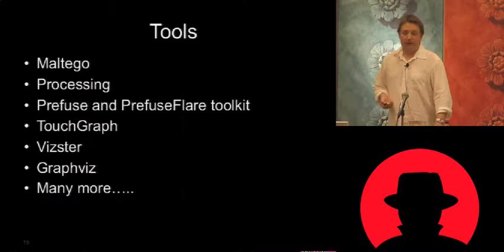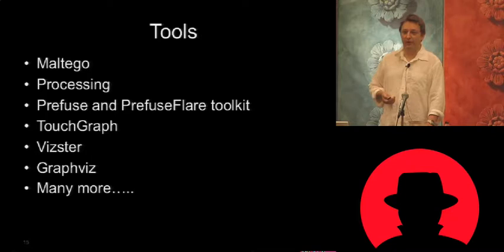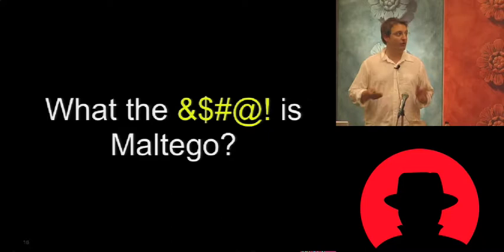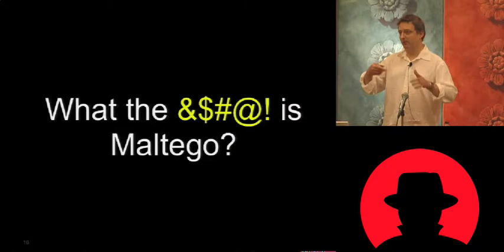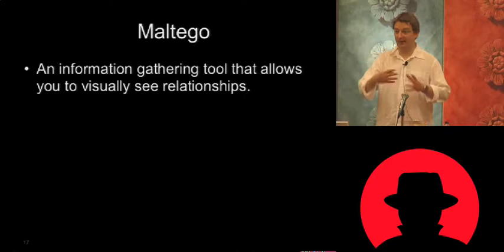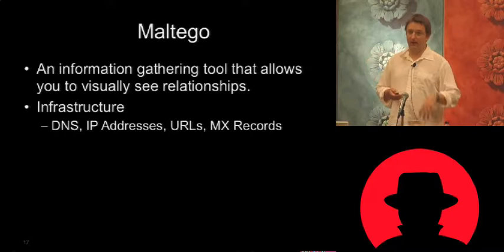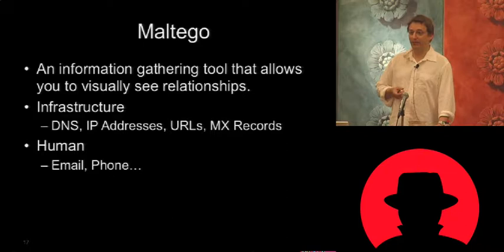There are a number of visualization tools out there — there's a great website called secviz.org with a whole bunch. I'm going to focus on Maltego. It's a tool for information gathering and visualizing information graphically. There are infrastructure components — DNS records, IP addresses, URLs, mail records — and a human component where you can look for mentions of people, telephone numbers, and link all those relationships together.